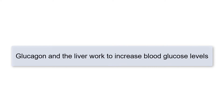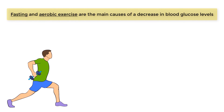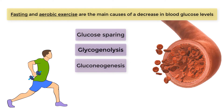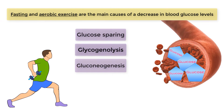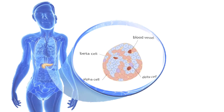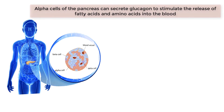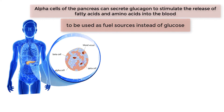Glucagon and the liver work to increase blood glucose levels. Fasting and aerobic exercise are the main causes of a decrease in blood glucose levels. The body responds in three ways to a decrease in blood glucose: glucose sparing, glycogenolysis, and gluconeogenesis. When blood glucose levels drop, one response is to keep as much glucose in the blood as possible without actually increasing the amount of glucose in the blood. This is accomplished by making other fuel sources available. In response to a drop in blood glucose, alpha cells of the pancreas can secrete glucagon to stimulate the release of fatty acids and amino acids into the blood to be used as fuel sources instead of glucose.